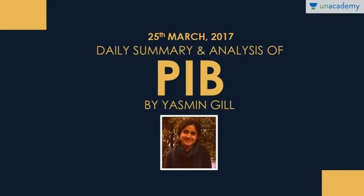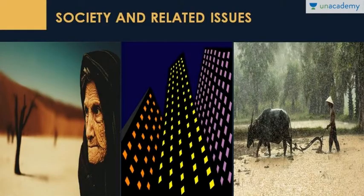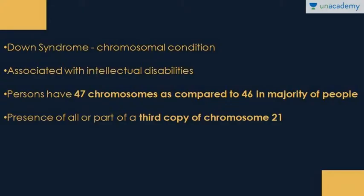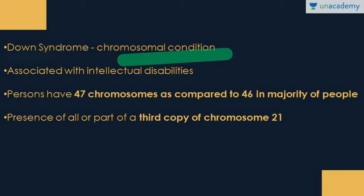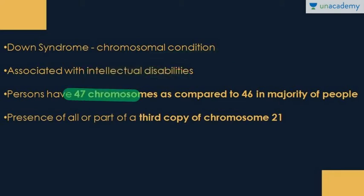Under society-related issues, we have Down Syndrome. World Down Syndrome Day was being celebrated. It is a chromosomal and genetic condition associated with not just intellectual disability but physical disability as well. The patient has 47 chromosomes instead of the 46 present in the majority of people. The problem lies in chromosome number 21, of which there is one extra copy.